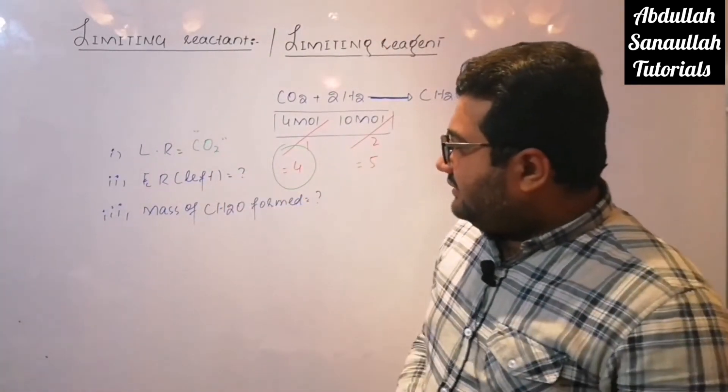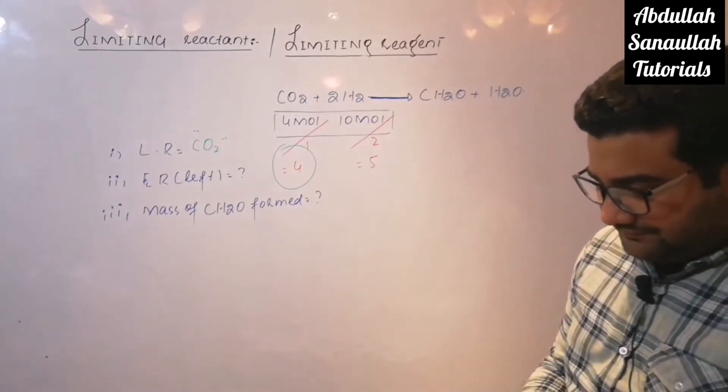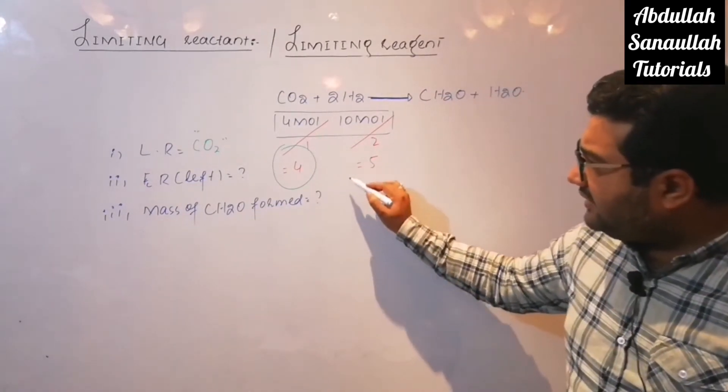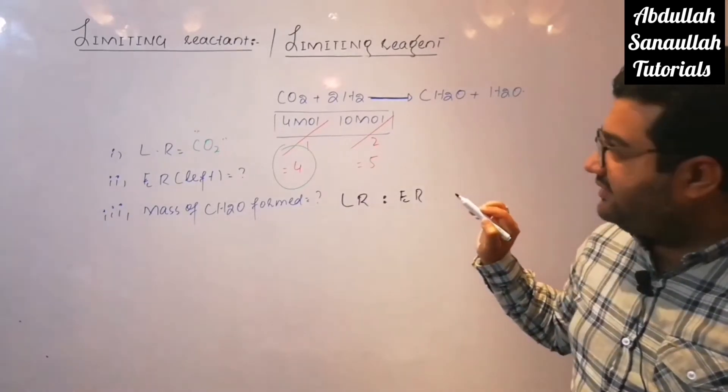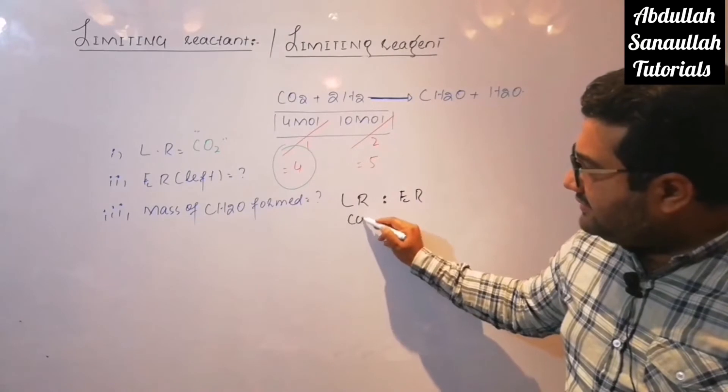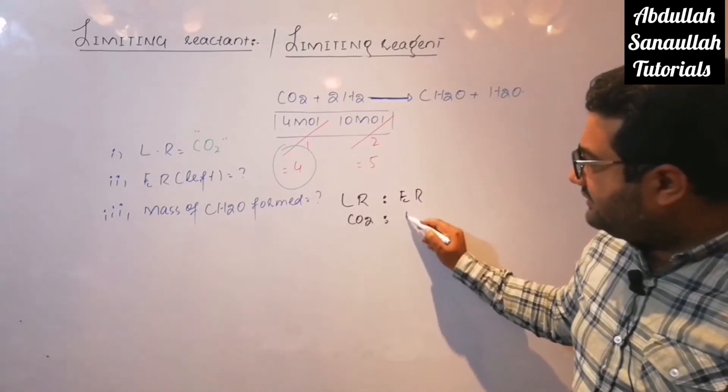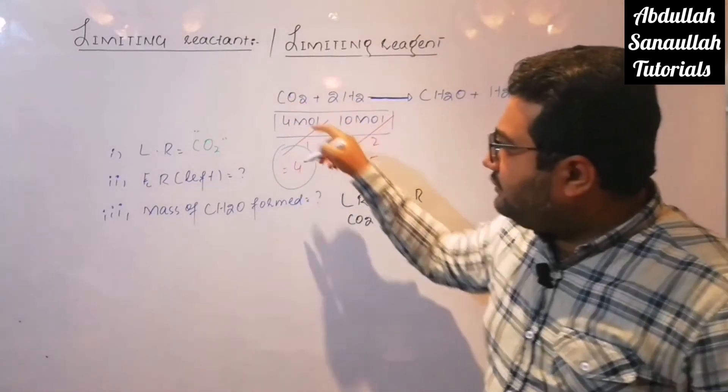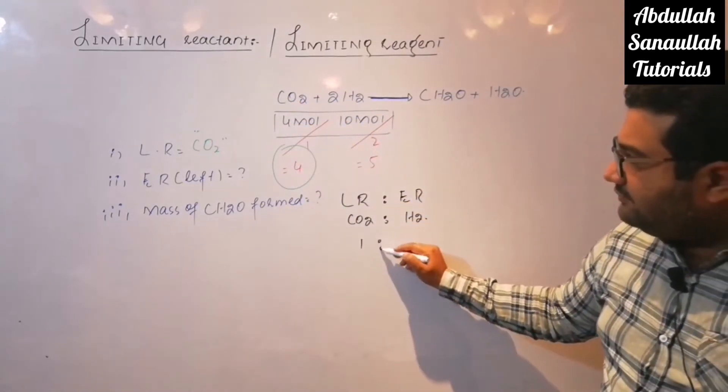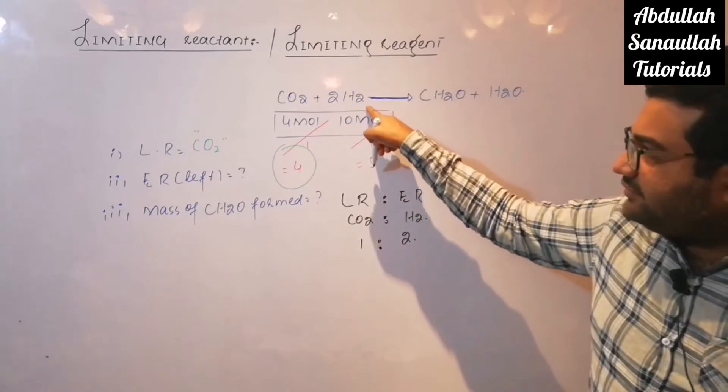Excess reactant left behind. Now you are required to compare the limiting reactant with excess reactant. Limiting reactant is CO2, excess reactant is hydrogen. It is quite obvious from the equation that one mole of CO2 completely reacts with two moles of hydrogen.